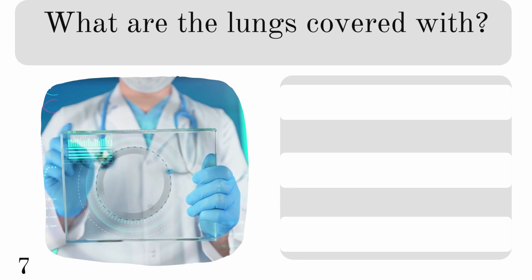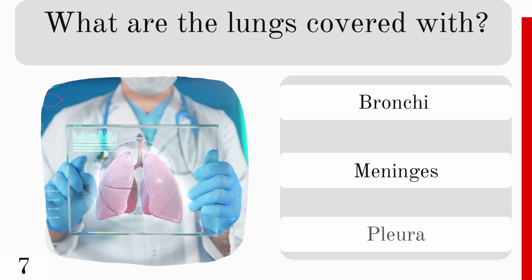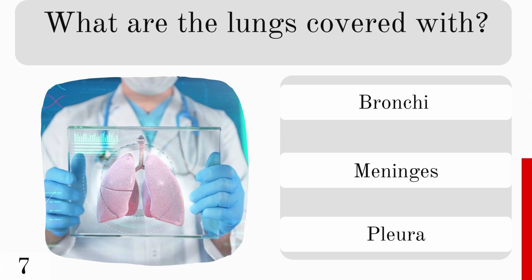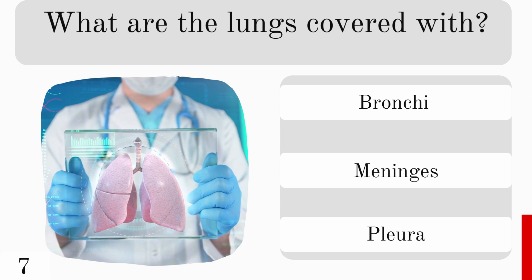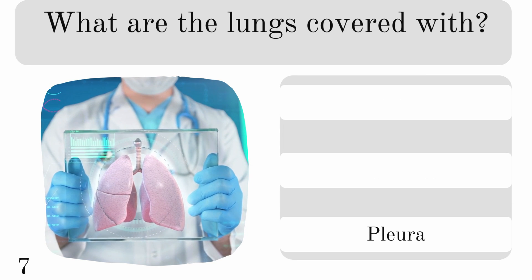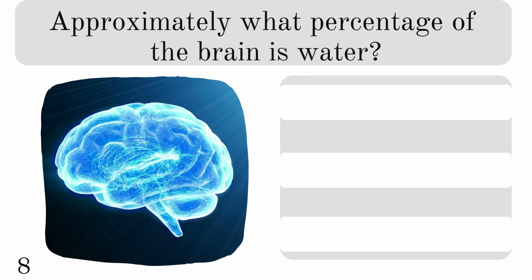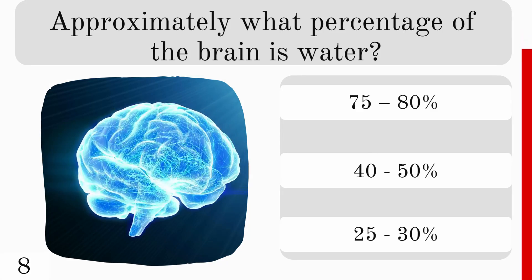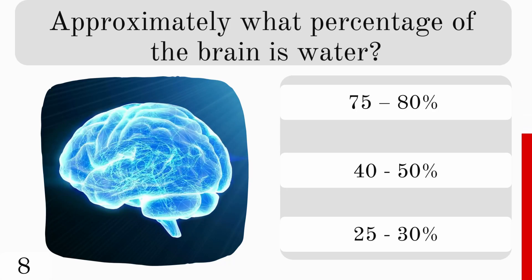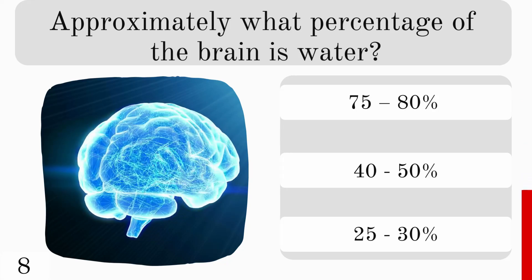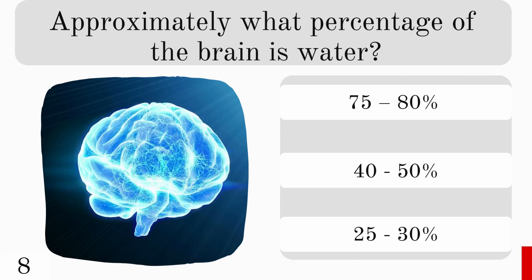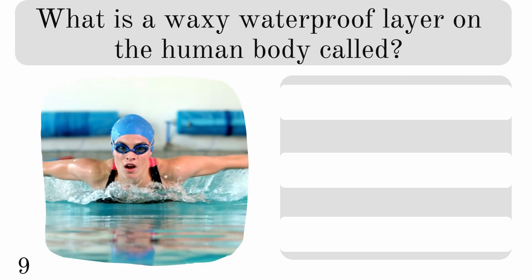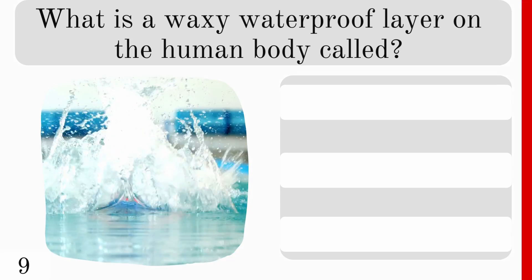What are the lungs covered with? Bronchi, meninges, or pleura? And the correct answer is pleura. Approximately what percentage of the brain is water? 75-80, 40-50, or 25-30? And it is 75-80%.